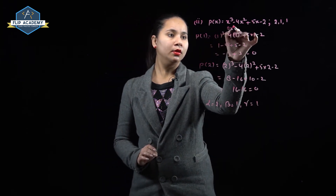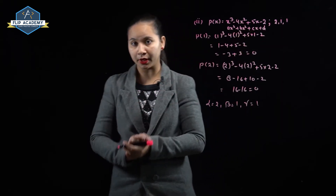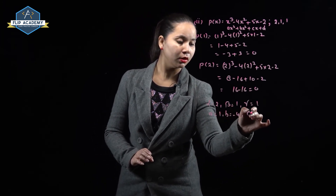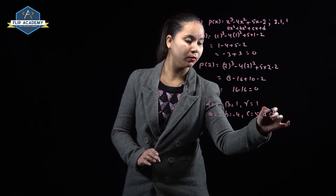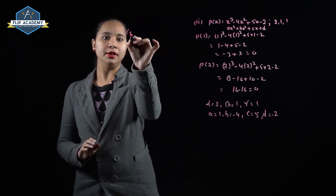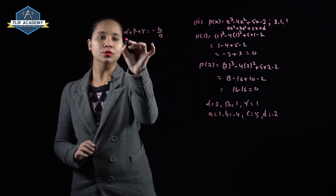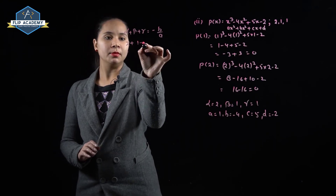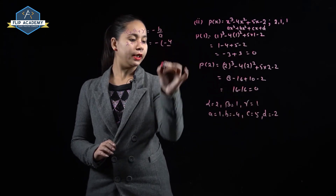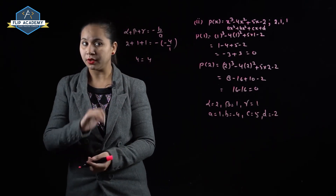Comparing with ax³ + bx² + cx + d: a = 1, b = -4, c = 5, d = -2. Checking α + β + γ = -b/a: 2 + 1 + 1 = -(-4)/1 = 4. So 4 = 4, and the relationship between zeros and coefficients is verified.